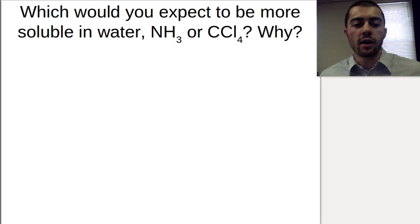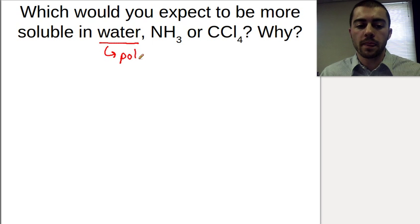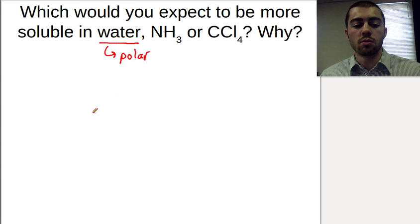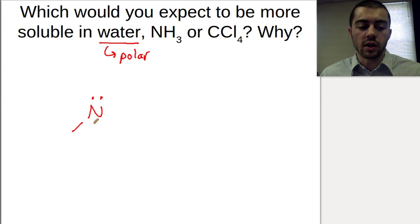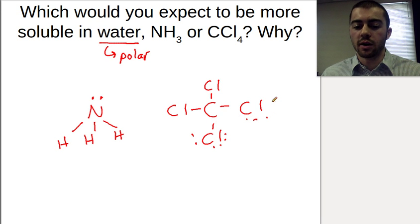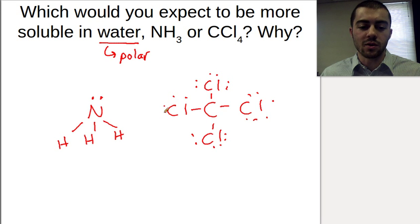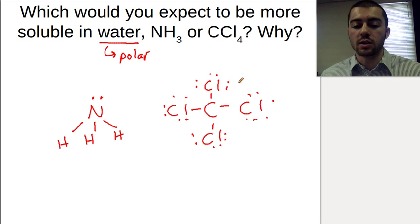For the last question: if we have NH3 and CCl4, which one would be more soluble in water? We just want to look at these two substances and see what the polarity is to determine their intermolecular forces. Water is polar. NH3 looks like this, and CCl4 has a whole bunch of lone pairs on all of these chlorines. CCl4 is symmetrical all the way around, so it's going to be nonpolar.